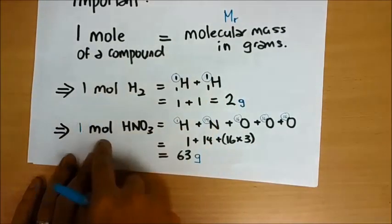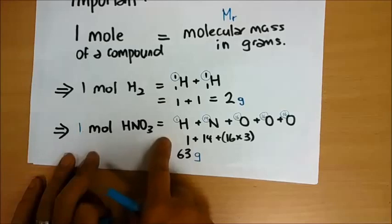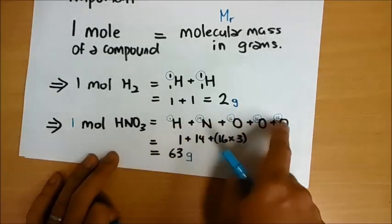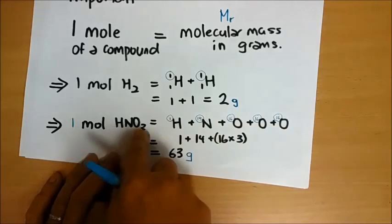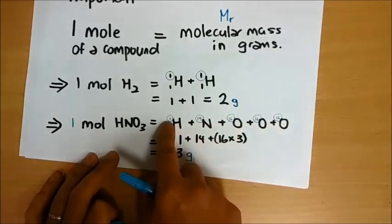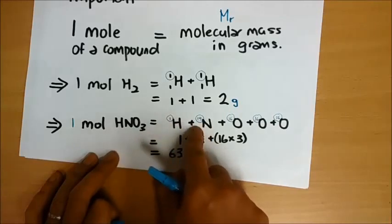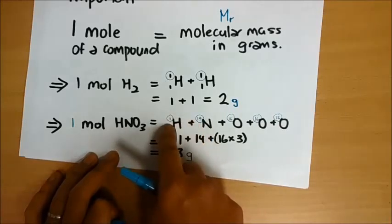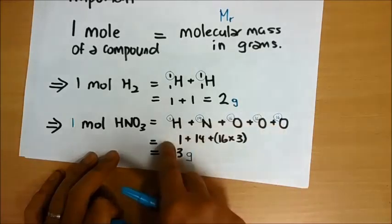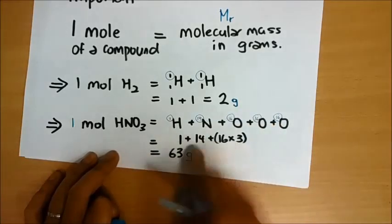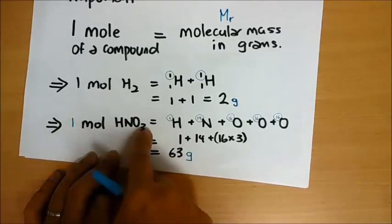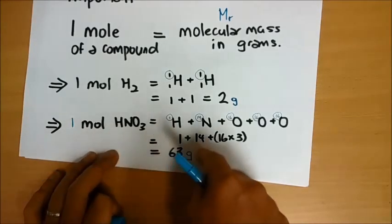If I want one mole of HNO3, I will add up all the atoms of one unit of HNO3. This gives me the molecular mass. Take the mass number of each element — in the case of hydrogen: 1, 14, 16, 16, 16, 16. I add everything together and I get 63 grams. So basically one mole of HNO3 will be 63 grams.